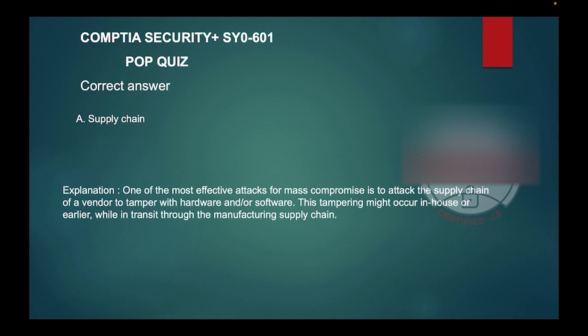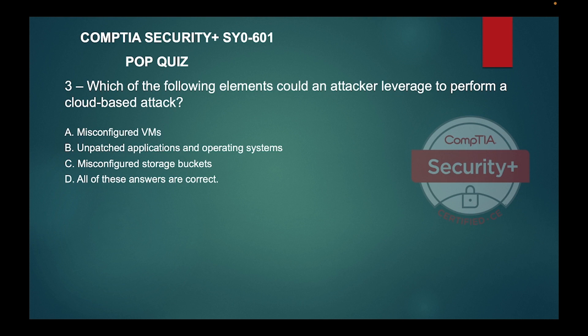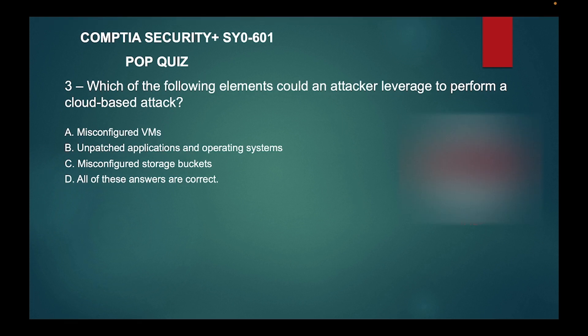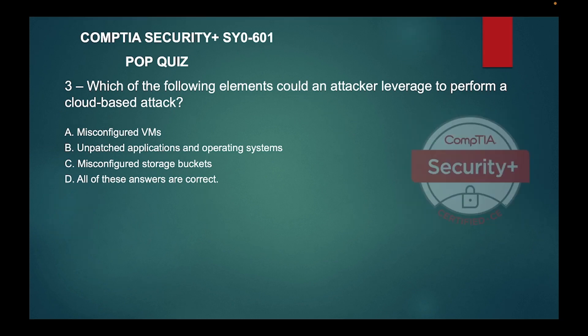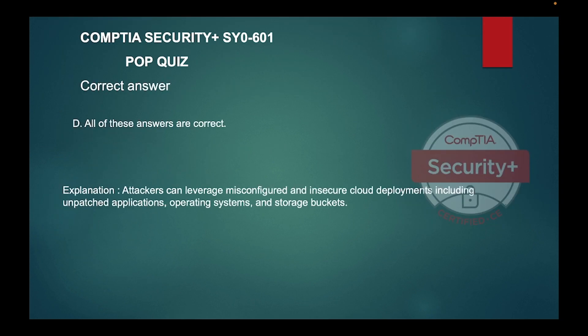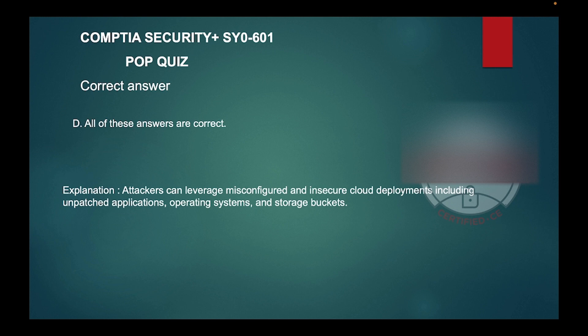Number three: which of the following elements could an attacker leverage to perform a cloud-based attack? A) Misconfigured virtual machines, B) Unpatched applications and operating systems, C) Misconfigured storage buckets, or D) All of these answers are correct? The correct answer is D, all of these answers are correct. Attackers can leverage misconfigured and insecure cloud deployments, including unpatched applications, operating systems, and storage buckets.